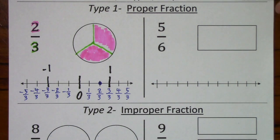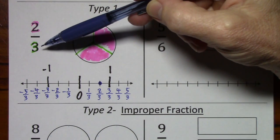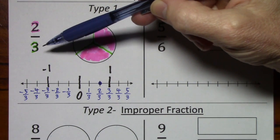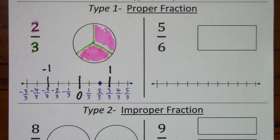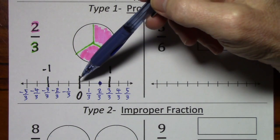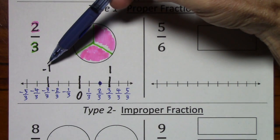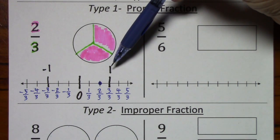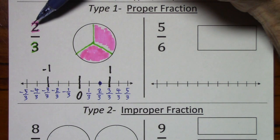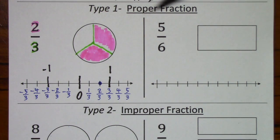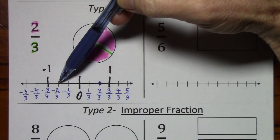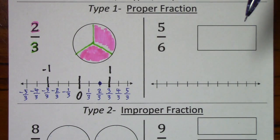With a proper fraction, the numerator is less than the denominator. Another way to think of that is it's a number between zero and one — but technically it's a number between negative one and one. If we had been given negative two-thirds and asked, 'Is this a proper fraction?' — the answer is yes; negative two-thirds is a proper fraction.